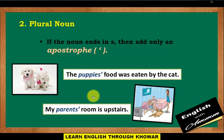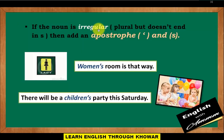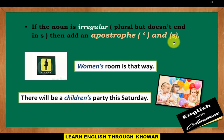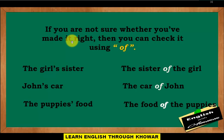Or, if the noun is an irregular plural but doesn't end in S, then add apostrophe and S. Example sentences: 'Women's room is that way,' and 'There will be a children's party this Saturday.' If you are not sure whether you have made it right, you can check it using 'of.'